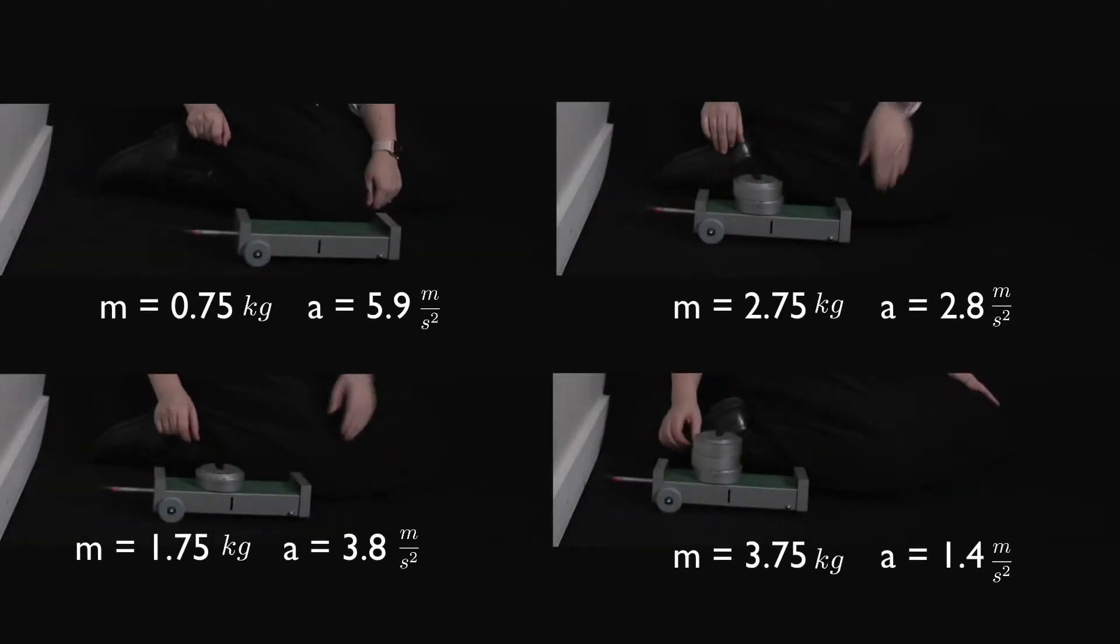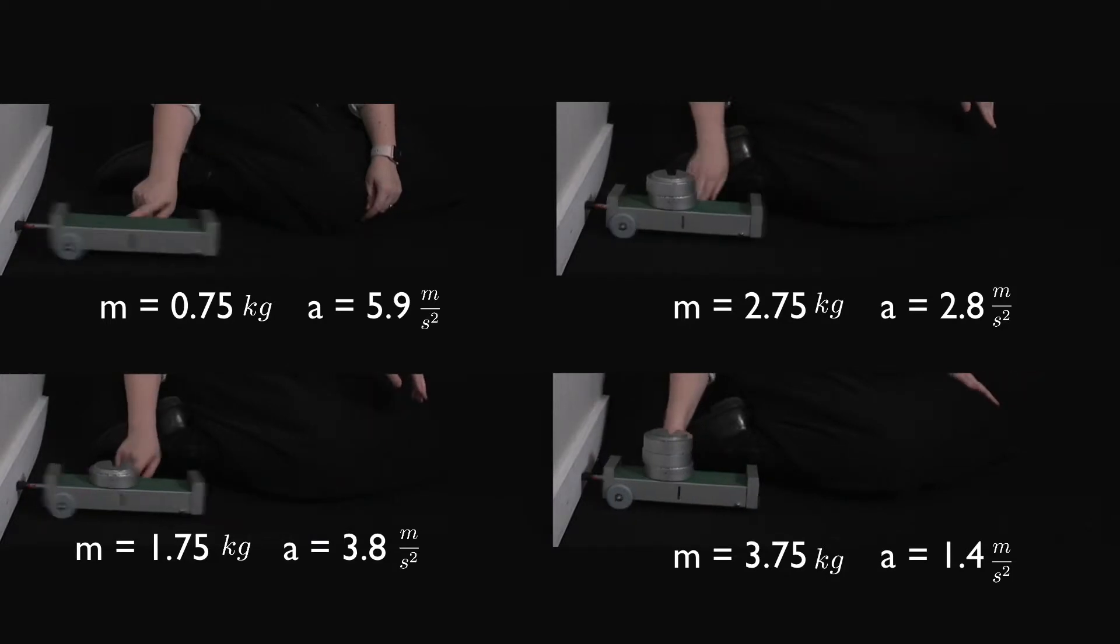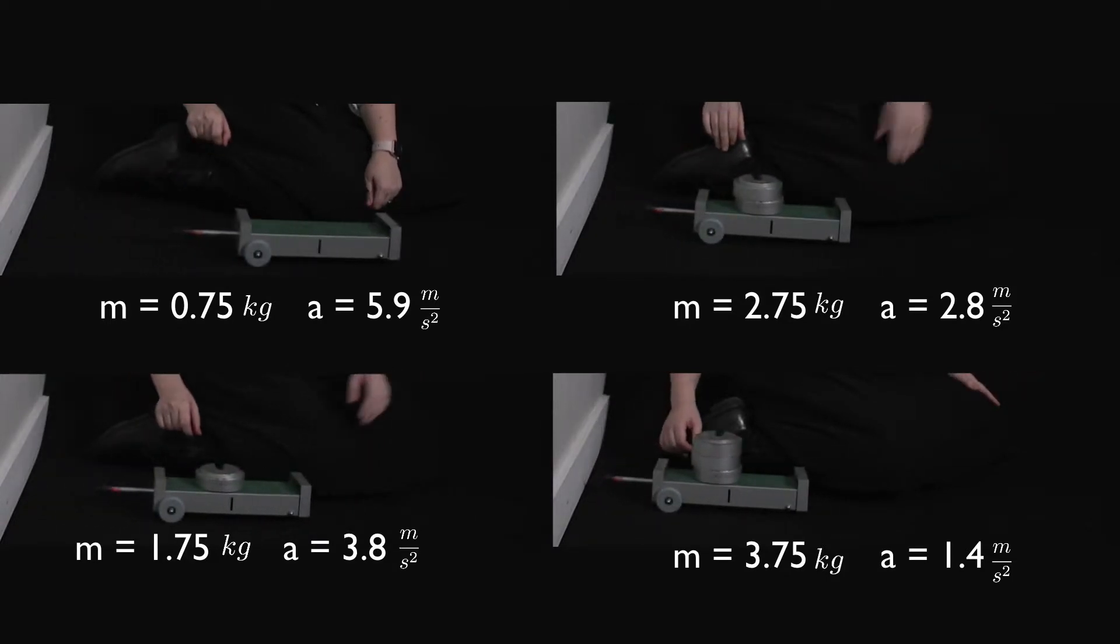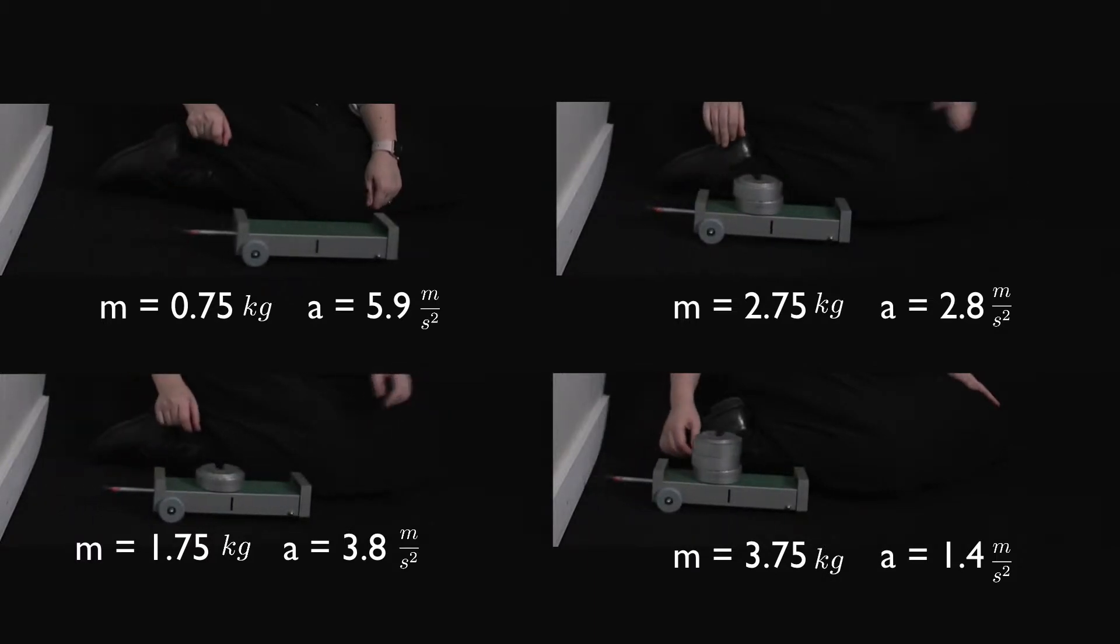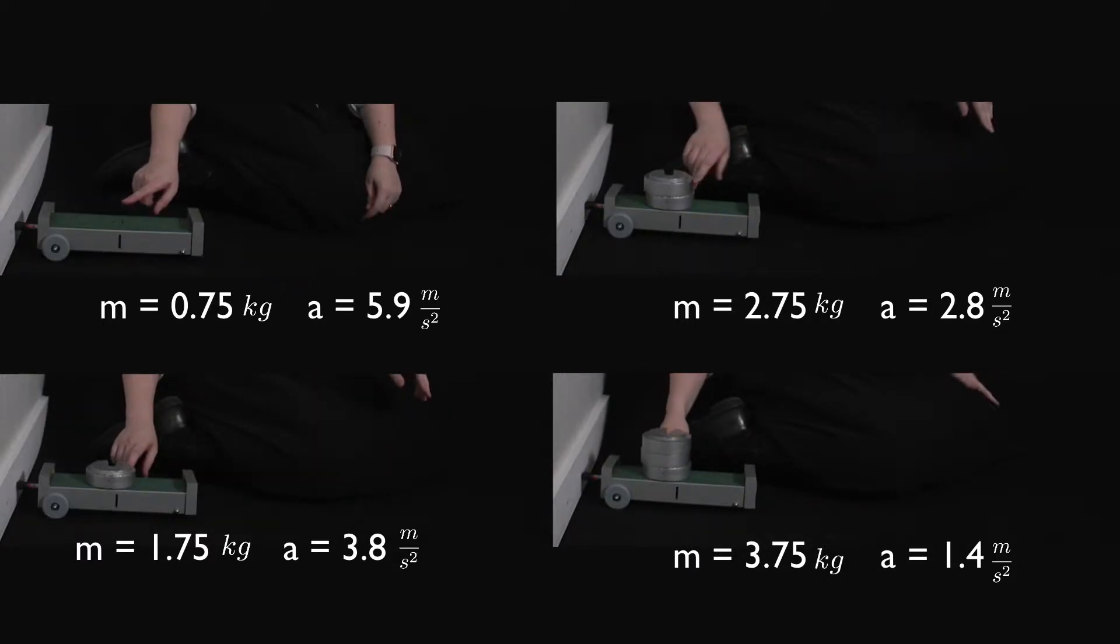So here's a replay of that. You can see in this replay that the trolley with the lowest mass had the highest acceleration, and the trolley with the highest mass had the lowest acceleration.